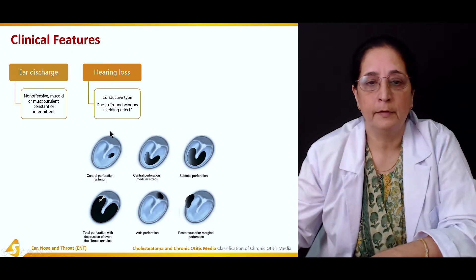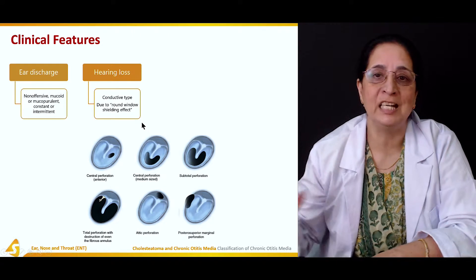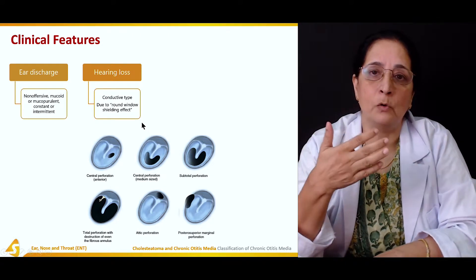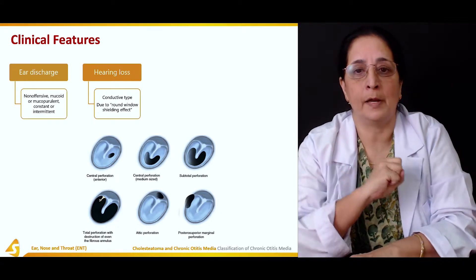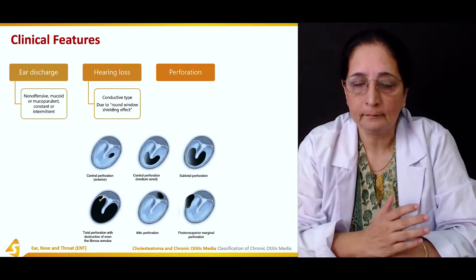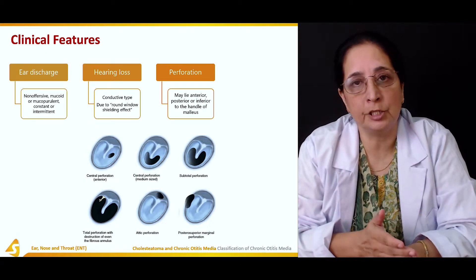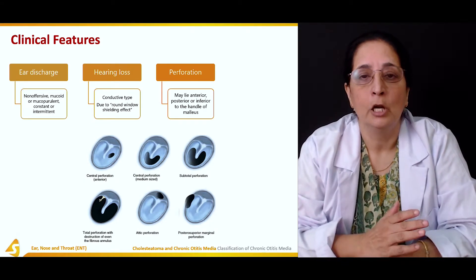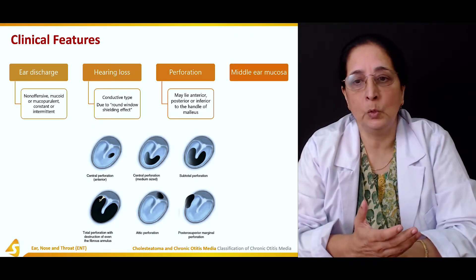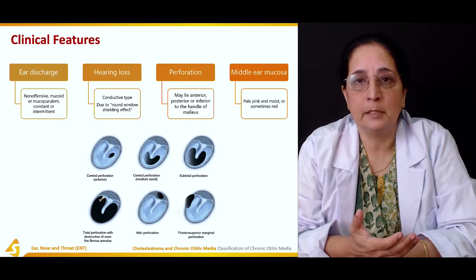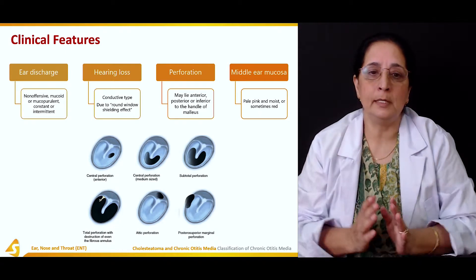There is hearing loss which is of conductive type, due to the round window shielding effect. There is also perforation which may lie anterior, posterior, or inferior to the handle of the malleus. The middle ear mucosa is pale pink and moist, or sometimes red.